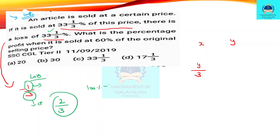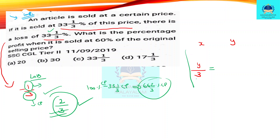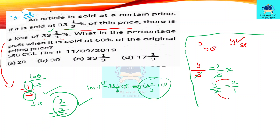That means 33% of the cost price is reduced, so 66% — that is 2/3 — of the cost price remains. And 1/3 by loss means 2/3 of the cost price is the reduced selling price. Now, what is the percentage profit when it is sold at 60% of the original selling price?